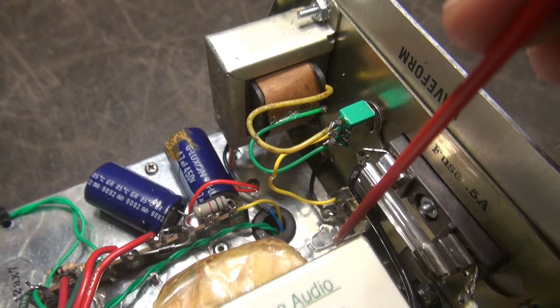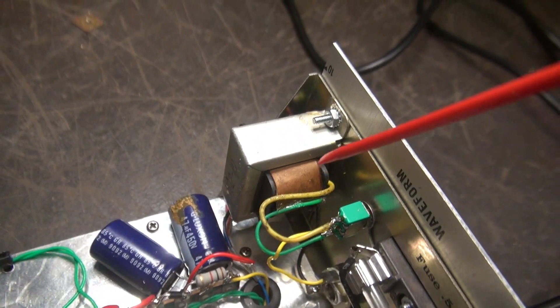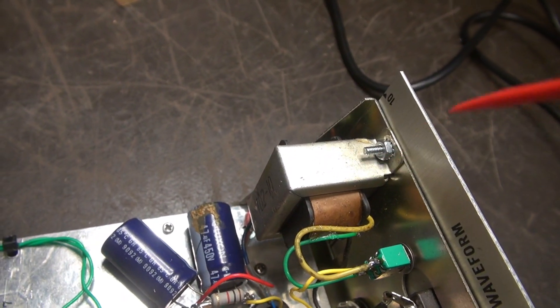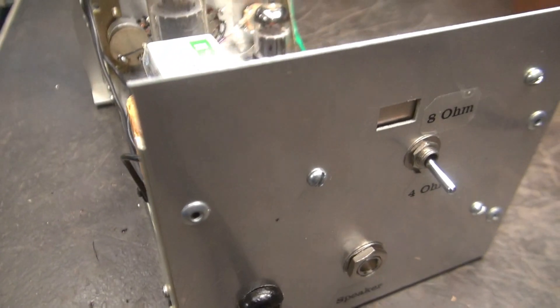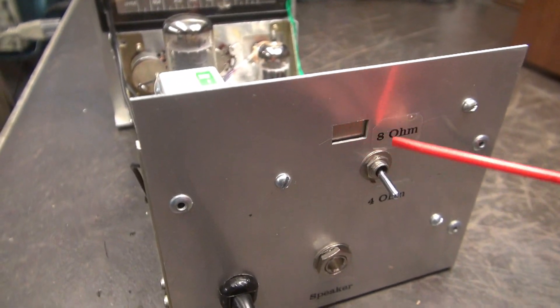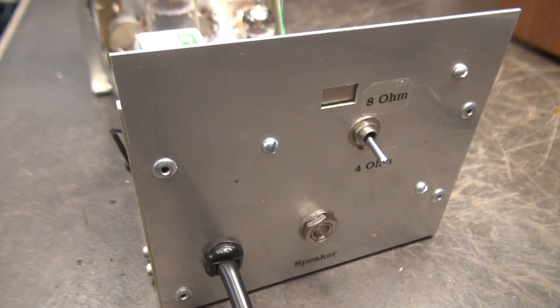Down there is the output jack. This switch selects between 4 and 8 ohm from that cool Japanese output transformer. Back side, here's that switch to select your ohms for the speaker, power input. Let's go underneath.